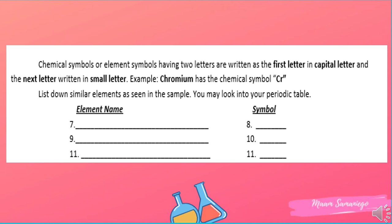This time, look for element symbols that come from the first and second letter of their name. Example: chromium has the chemical symbol Cr. Another example is helium — capital H and small letter e. Now you are going to write three elements with two-letter symbols from their name. Remember, in writing element symbols the first letter must be capital and the second letter is small.